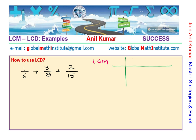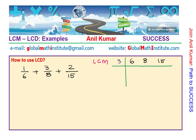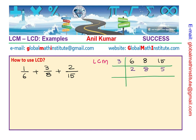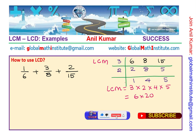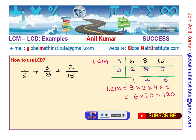We need to find LCM of the three denominators 6, 8, and 15 using the division method. Dividing by 3: 3 times 2 is 6, 8 is not a multiple of 3 so we keep it as 8, and 15 divided by 3 is 5. Now 2 and 8 have a common factor of 2, so dividing by 2 gives 1, 4, and 5. The LCM is the product: 3 times 2 times 4 times 5, and 4 times 5 is 20, times 6 is 120. So LCM is 120.